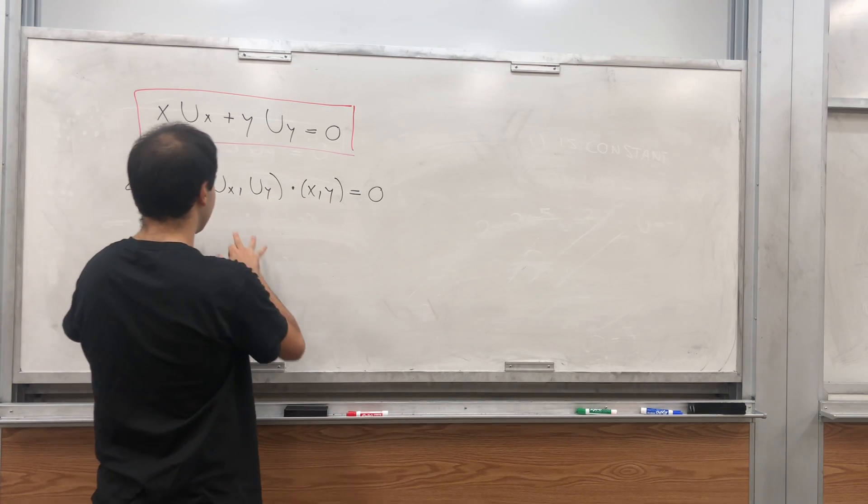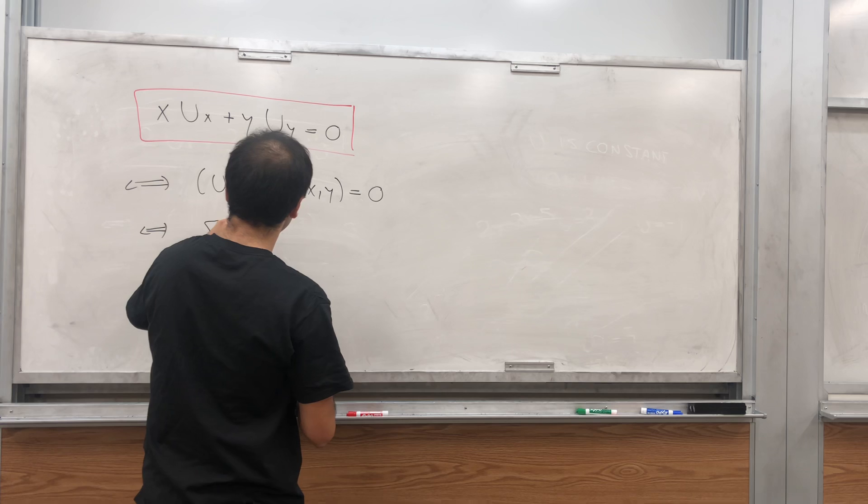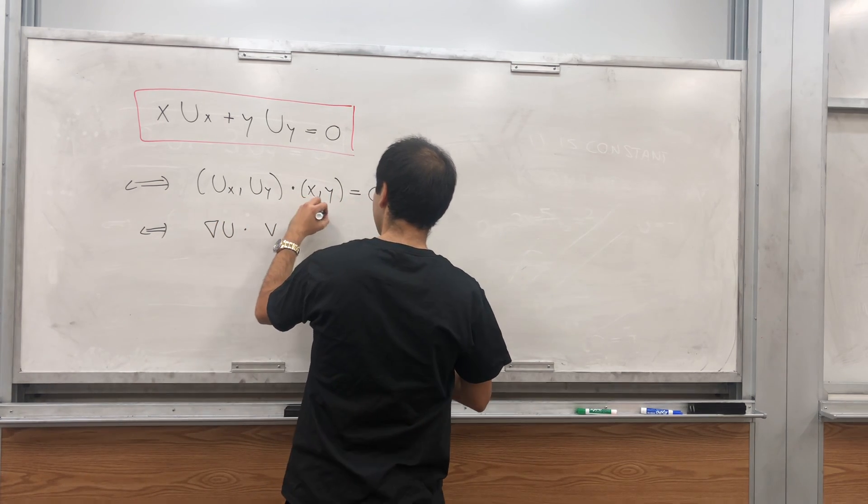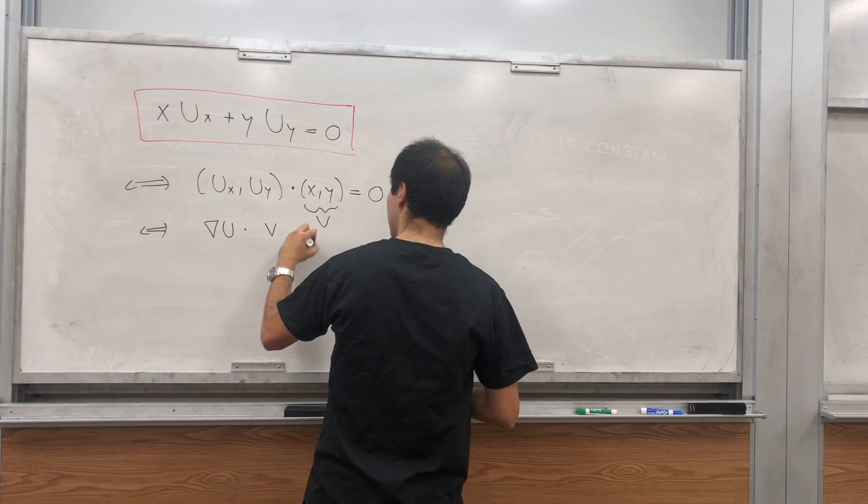And again, you can recognize this as the gradient. So, gradient of u dotted with this vector v equals zero.